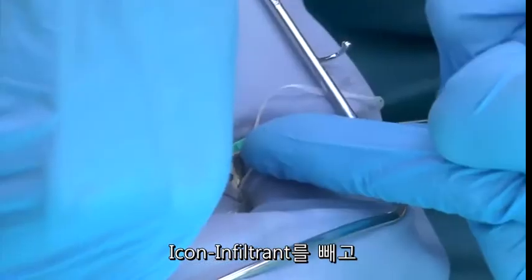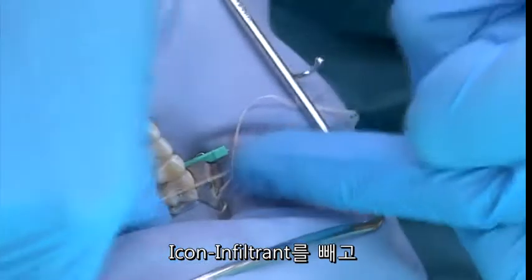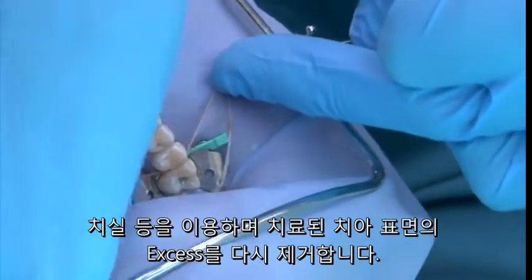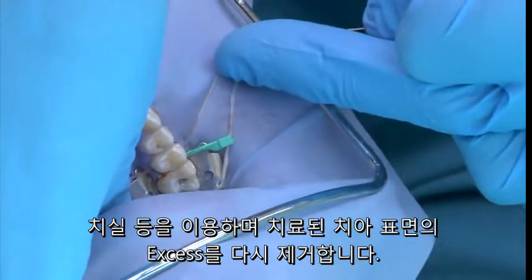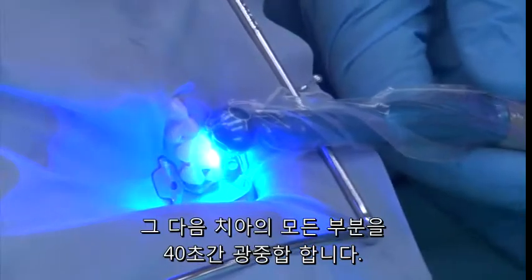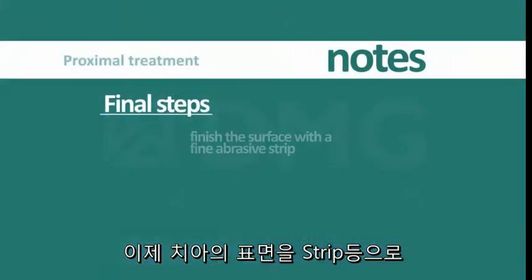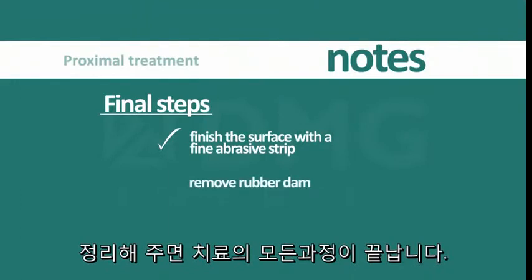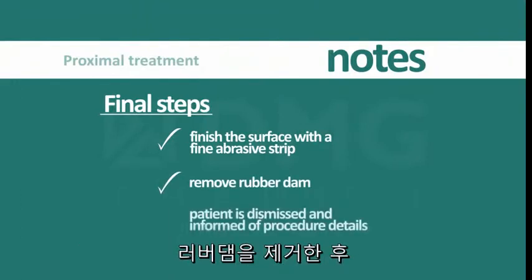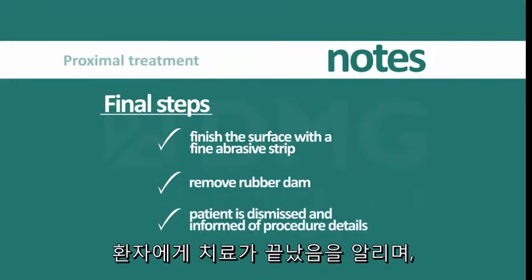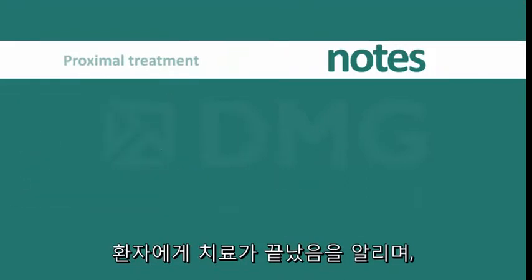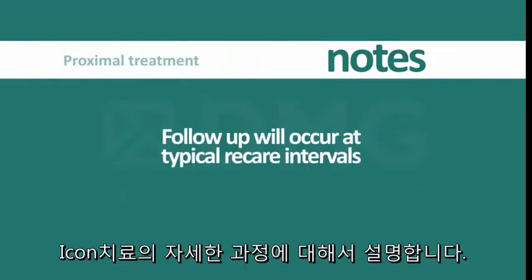Remove the proximal tip from the treatment area and floss once again to remove excess material from the surface. Then light cure all areas for 40 seconds. The surface is now finished with a fine abrasive strip. After removal of the rubber dam, the patient is dismissed after being informed of the details of the procedure performed. Follow-up will occur at typical re-care intervals.